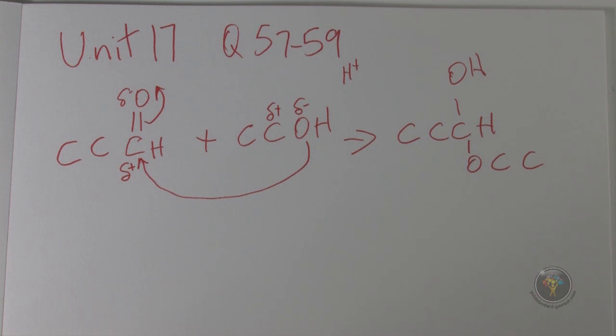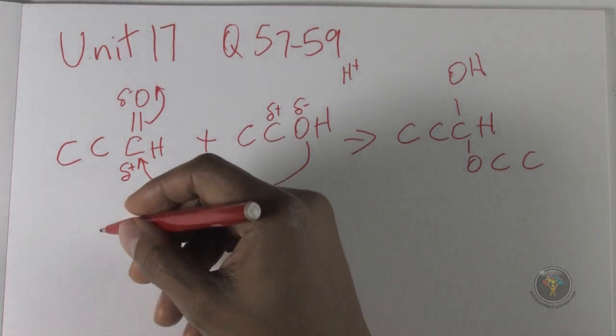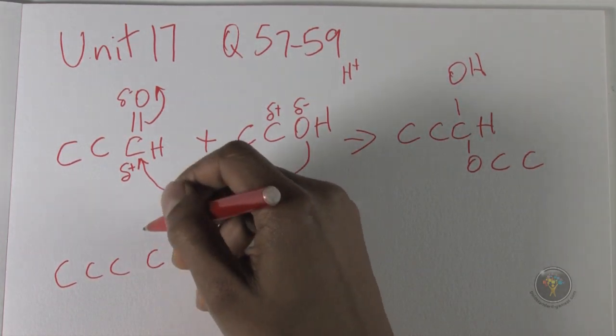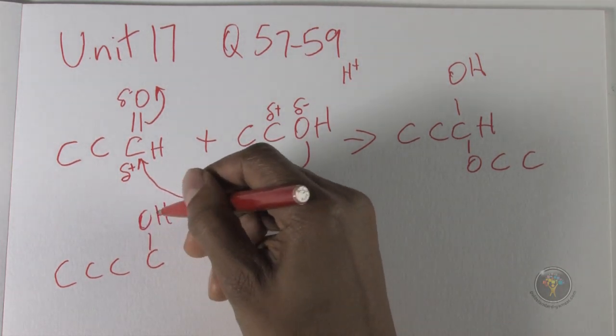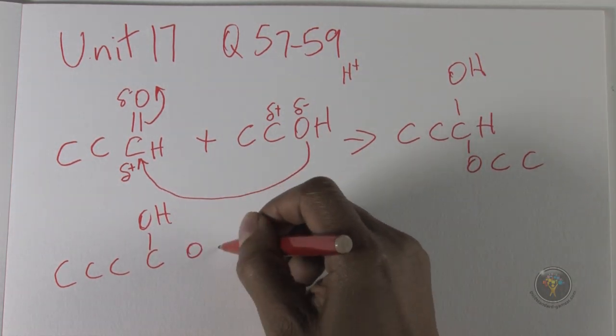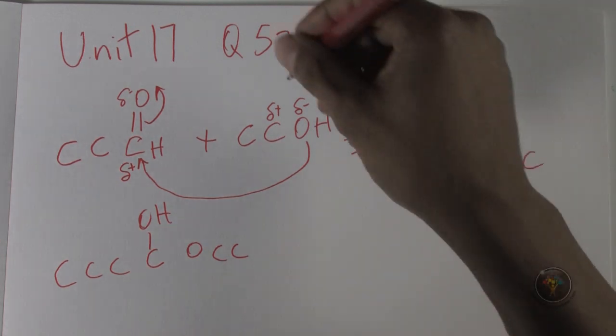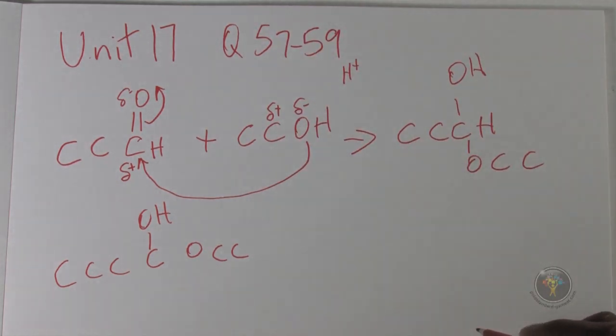Moving on to question 58: which one of the following pairs of compounds can be used to form the hemiacetal? They show the hemiacetal which is one-two-three-four carbons, then an OH group, and then OCC. That's the one that they have shown. It's not very different from the reaction that we just did actually.